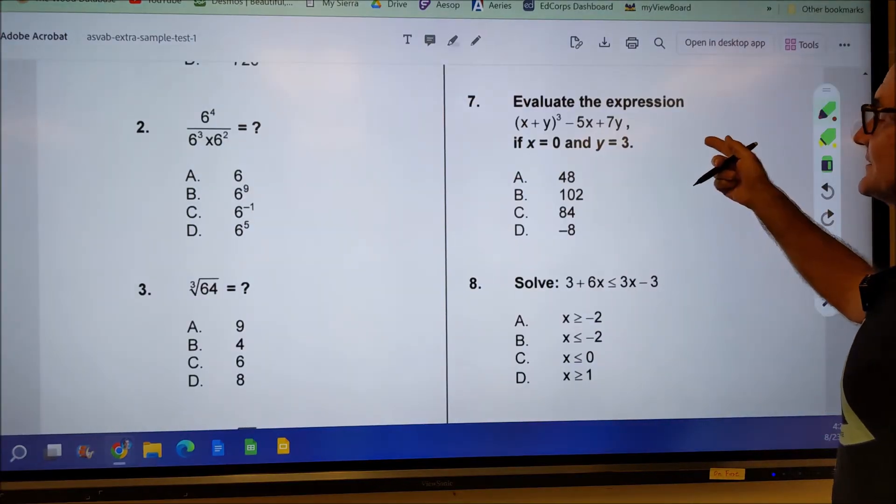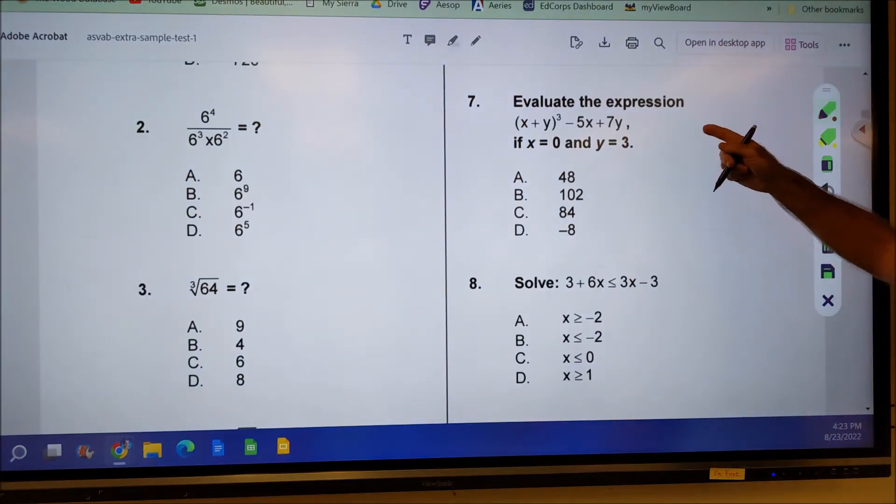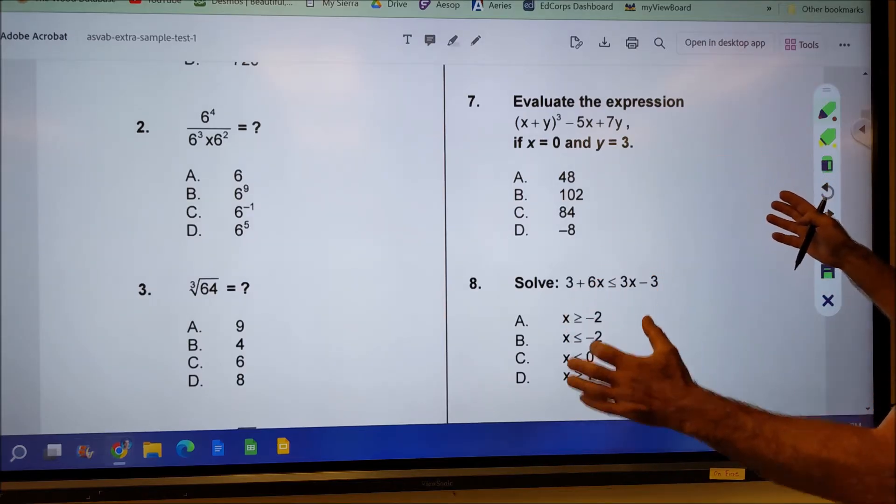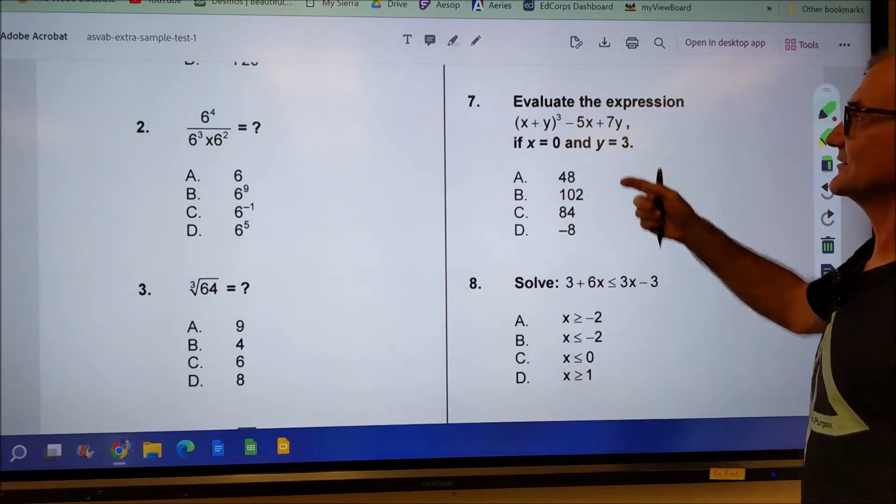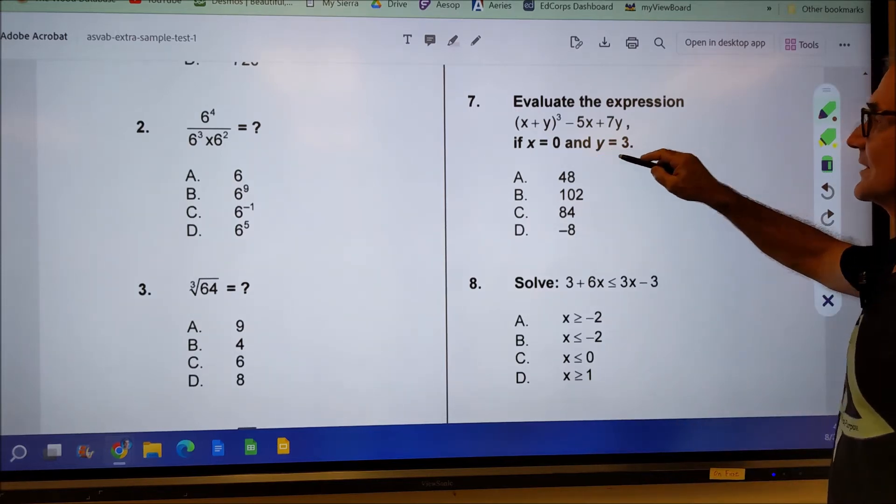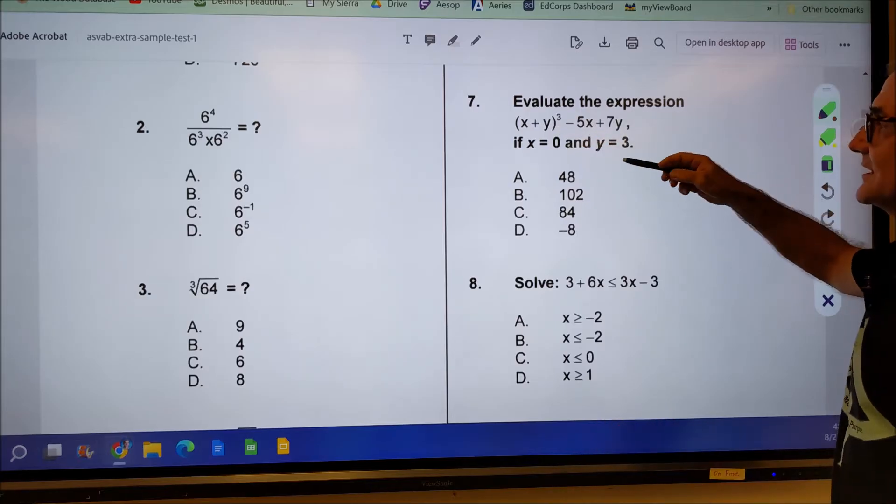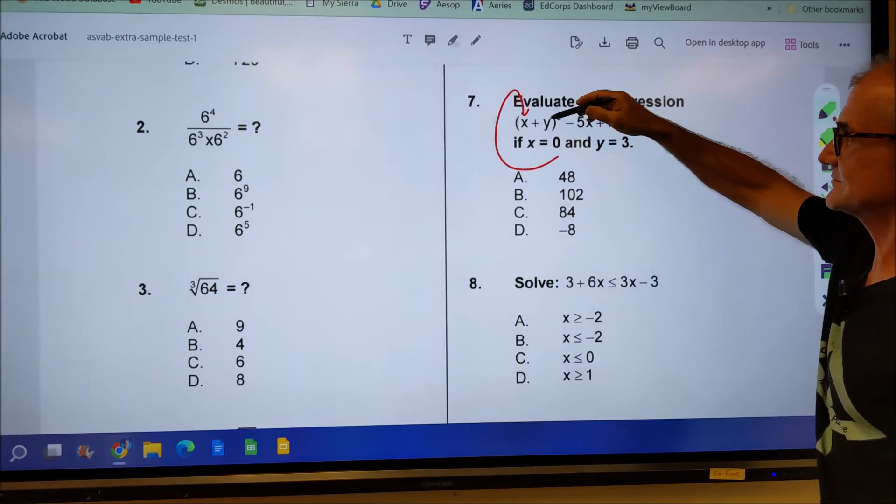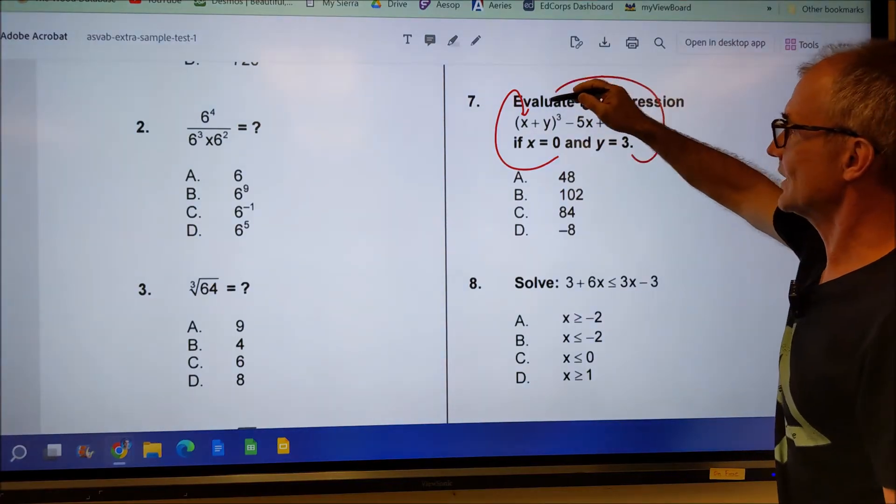Number seven says evaluate the expression. That means there's no equal sign. So there's nothing you could do except plug in values and evaluate it. So I have a value for X, a value for Y. I could just open that whole thing up, or I could just plug these values in right away, right here. X is equal to zero. It goes in there. Y is equal to three. It goes in there.